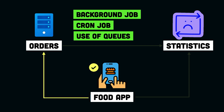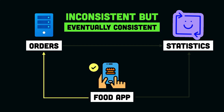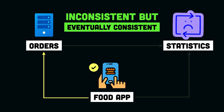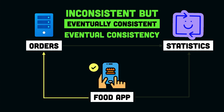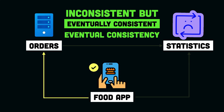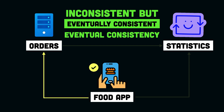So this way, we will have inconsistent data for some time, but as soon as the background job runs, our data is going to be eventually consistent. That is what eventual consistency is — the system will be in an inconsistent state for some time, but it is eventually going to be consistent.